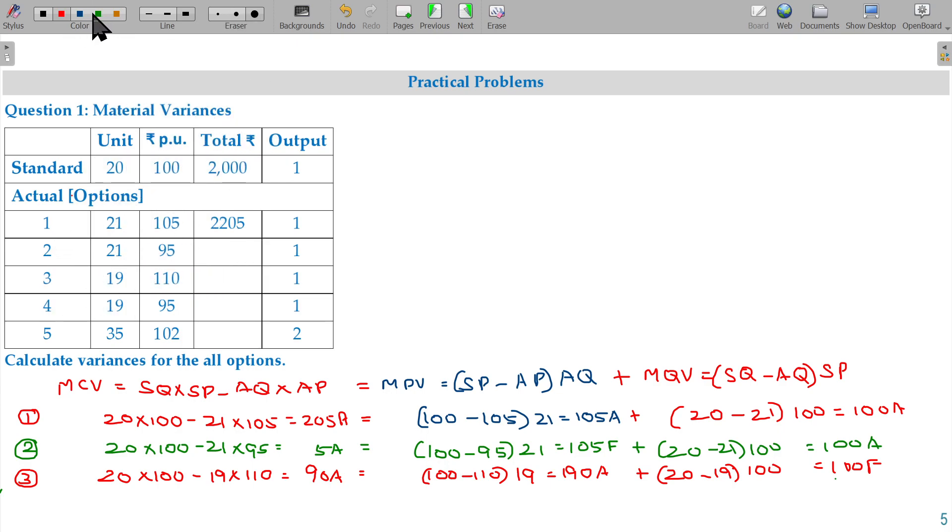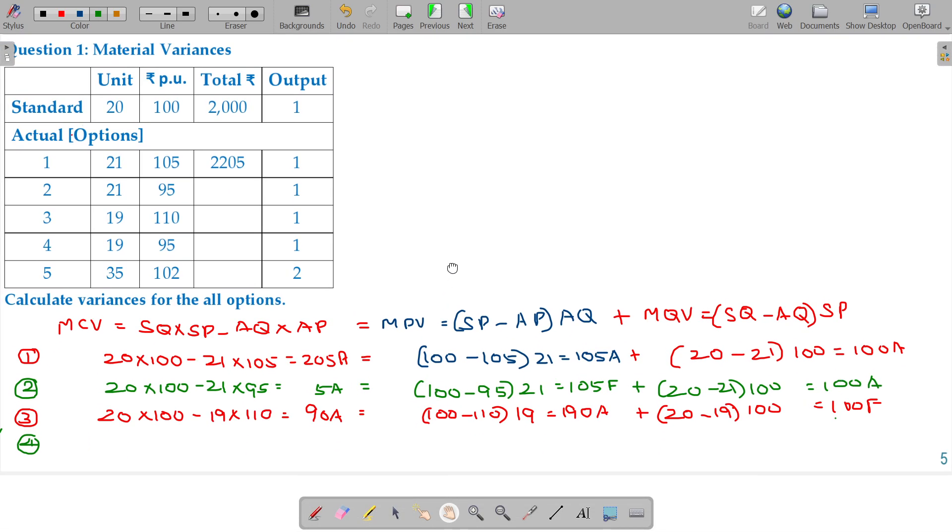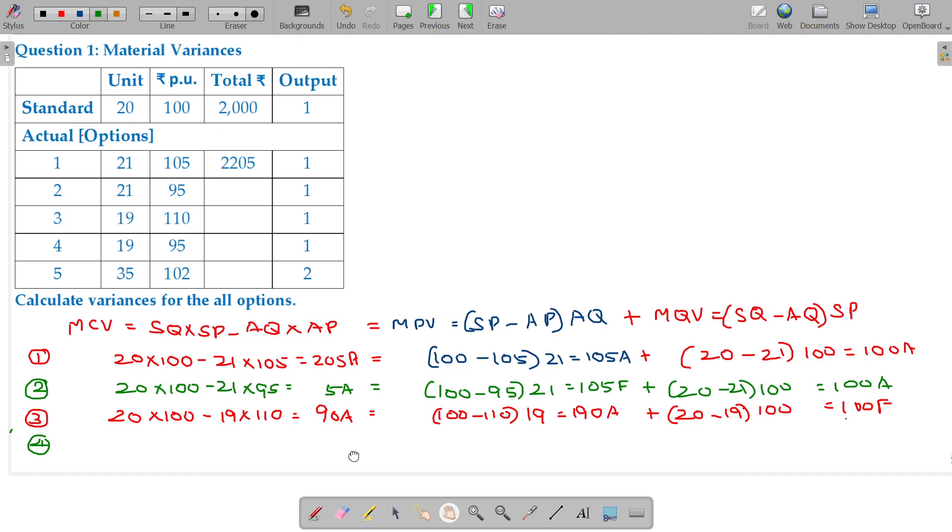Now let us move on to the fourth one. In the case of fourth option, the same way, standard 20 into 100, 20 into 100. Actual, fourth, 19 into 95. Quantity less consume. Value also less. So very happy situation here. More the happiness gives us more means favorable situation. The favorable situation here being 195, 195 favorable.